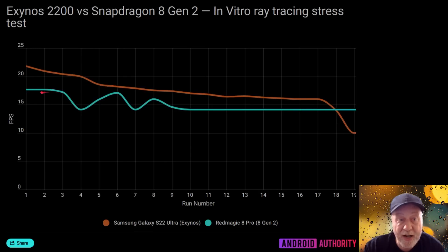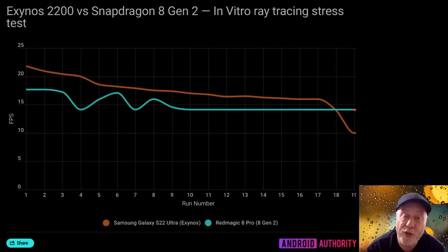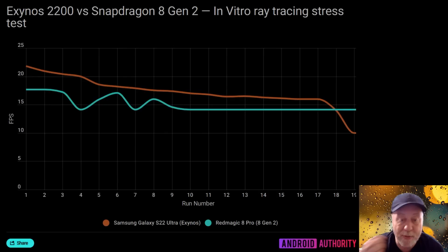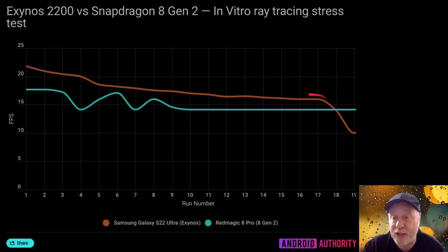The Snapdragon did well for the first couple of runs, then dipped and recovered repeatedly before leveling out just under 15 fps after about 10 runs, staying there through the rest of the test. This is partly down to the thermal design of each device — the Red Magic 8 Pro and the S22 Ultra. It also suggests the Exynos may have a thermal problem toward the end. More testing is needed, especially with Dimensity 9200 devices.